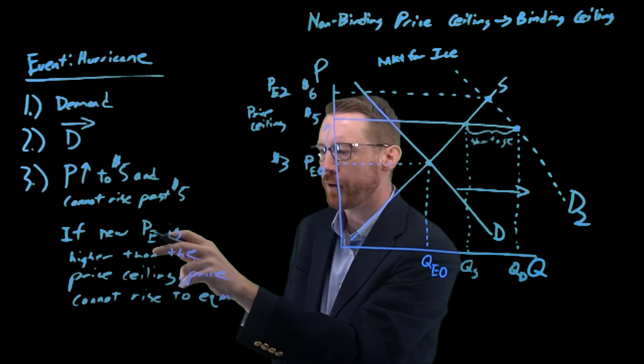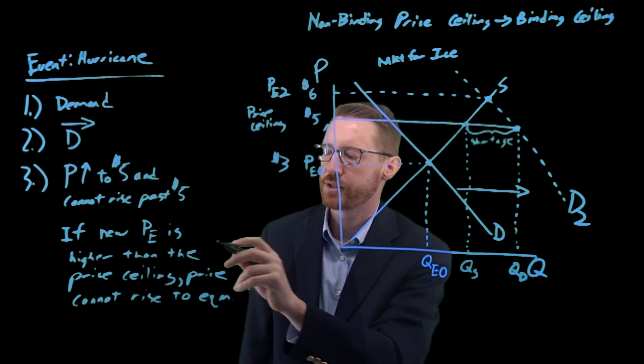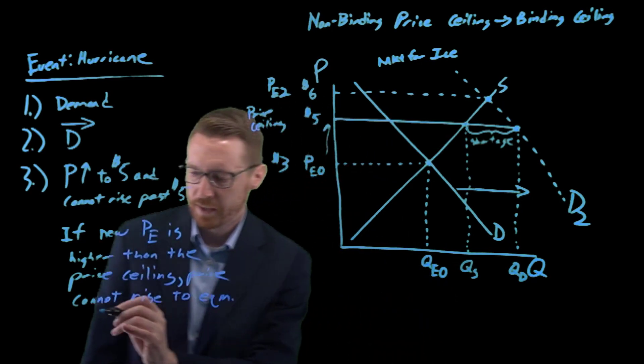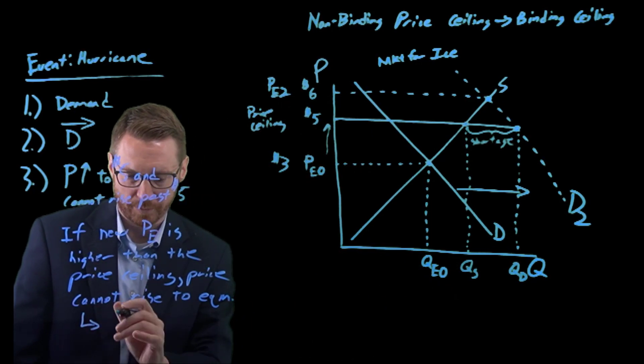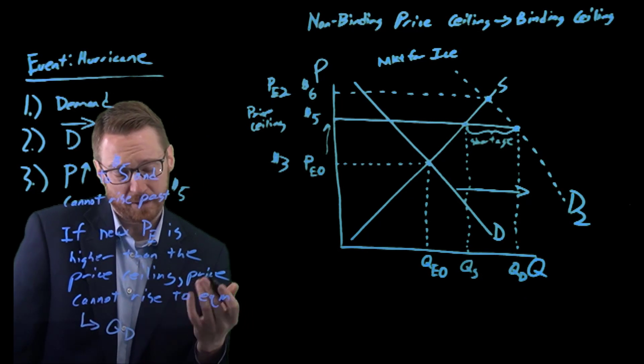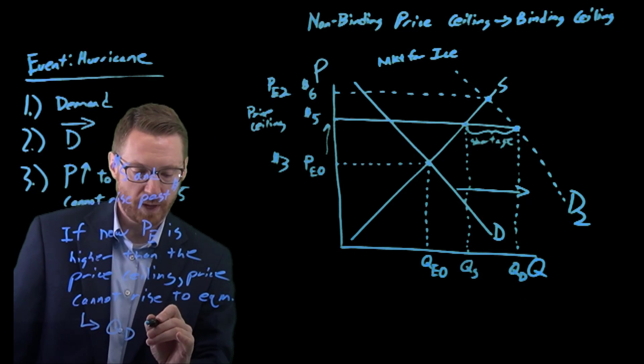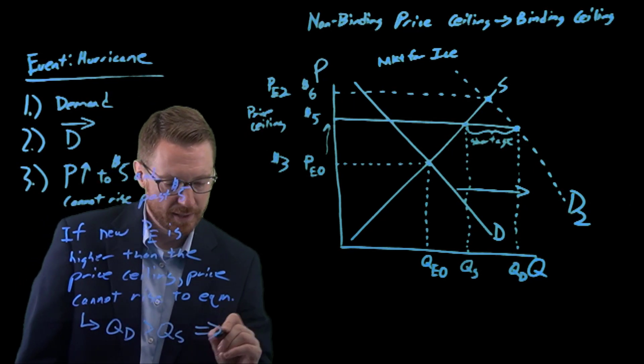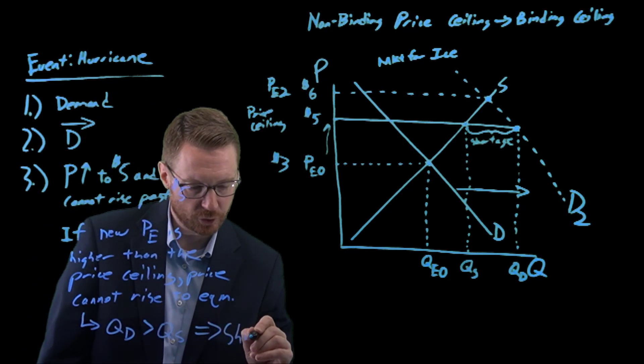If our new equilibrium price is higher than the price ceiling, price cannot rise to the equilibrium. What's our result from that? That means at a price that's effectively too low, quantity demanded exceeds quantity supplied, and we end up with a shortage.